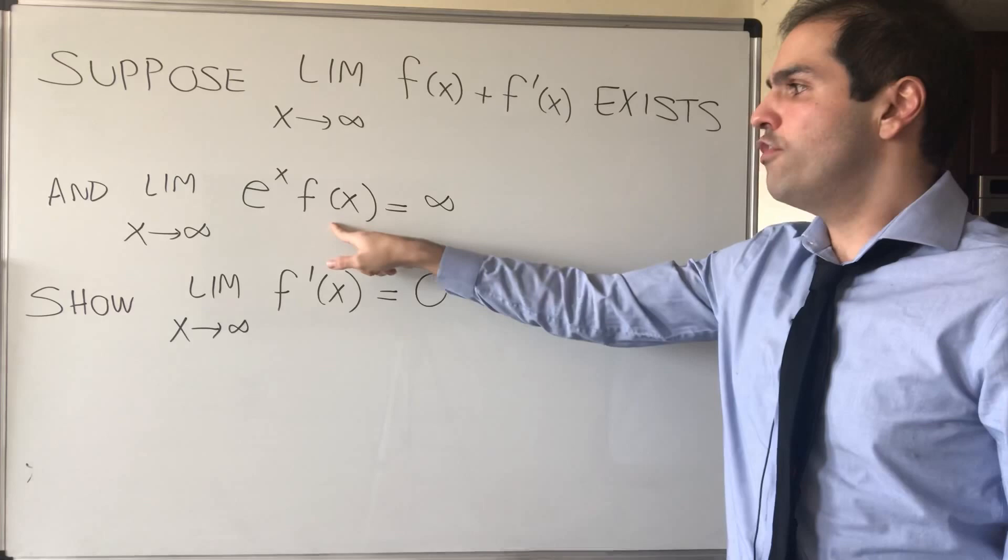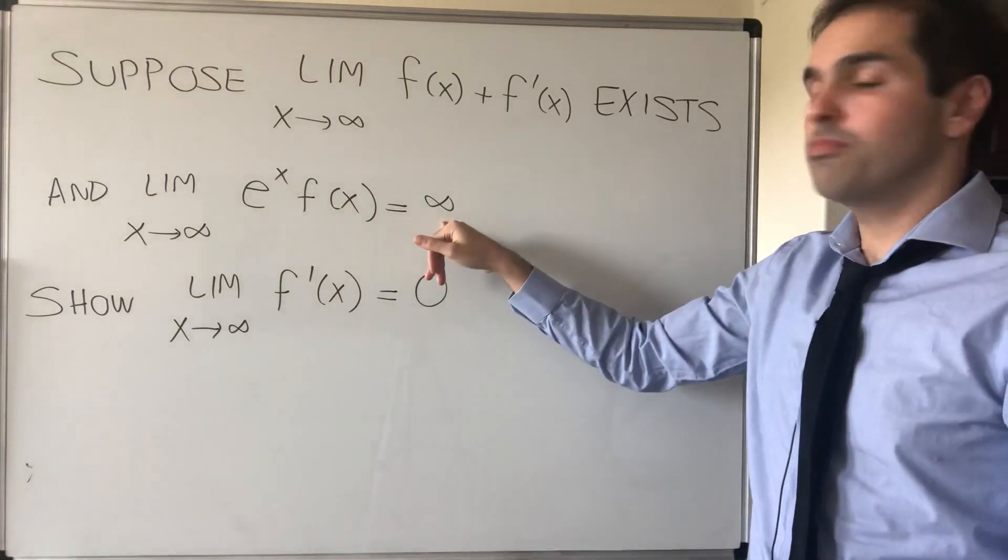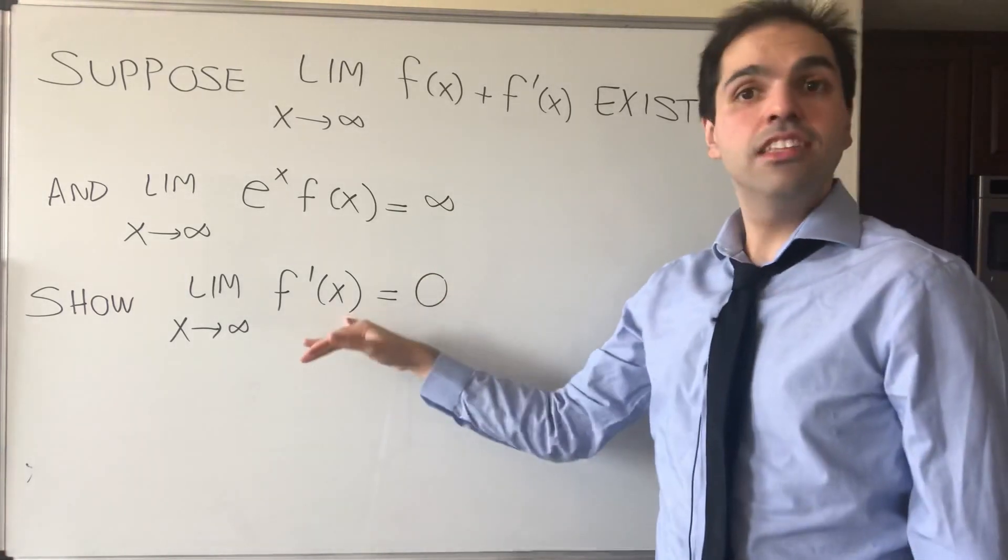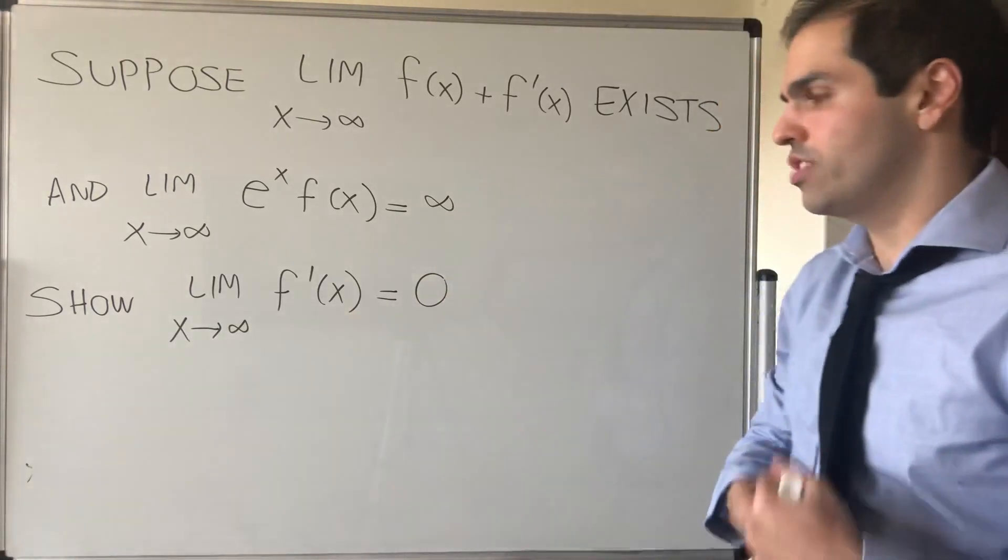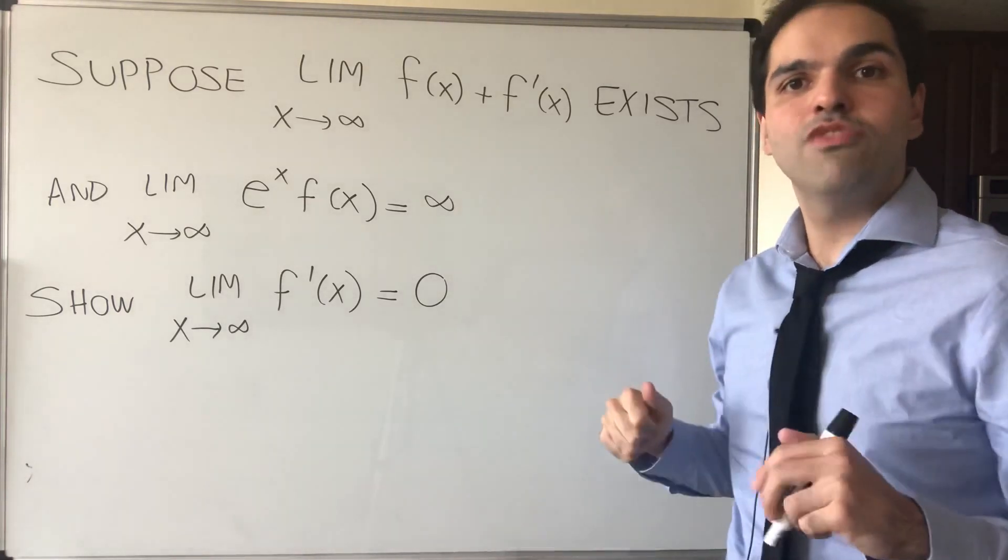and moreover, if you multiply f by e to the x and take the limit, this blows up to infinity. Show that, in fact, the derivative of f has to go to zero.